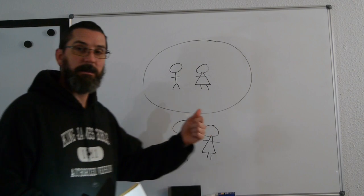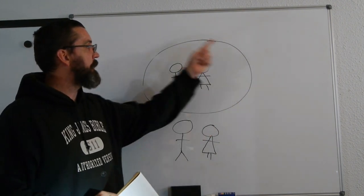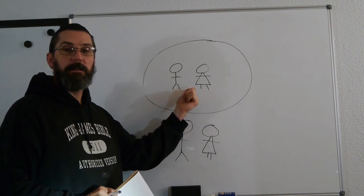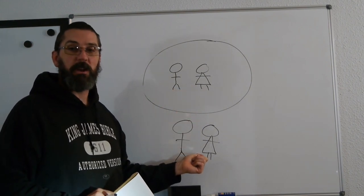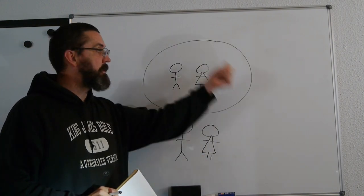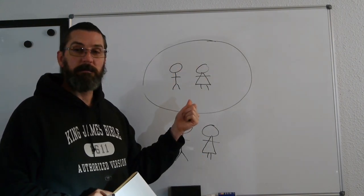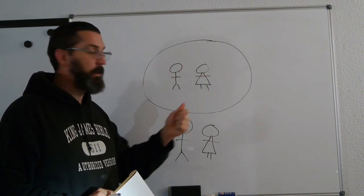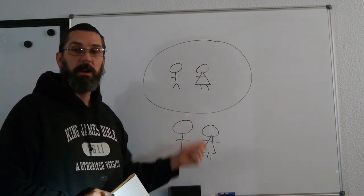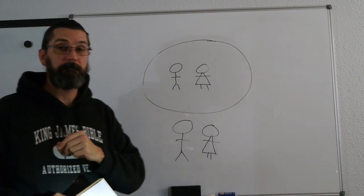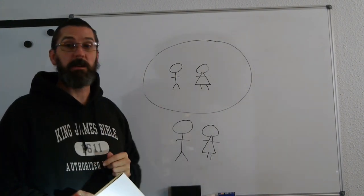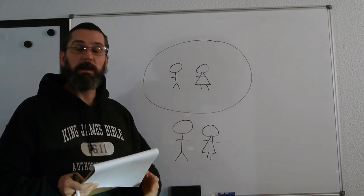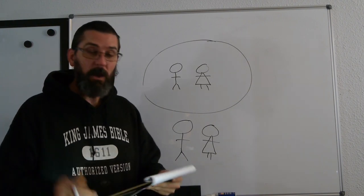Remember, liberty in its simplest form: there's a law — the circle is a law. Obeying the law is here, disobeying the law is over there, and there's a consequence for disobeying. What's liberty? The circle gets taken down. You can be here or you can be here — you have a choice and there are no consequences. That's true liberty in its simplest form. Let's look at some things where people misuse liberty.